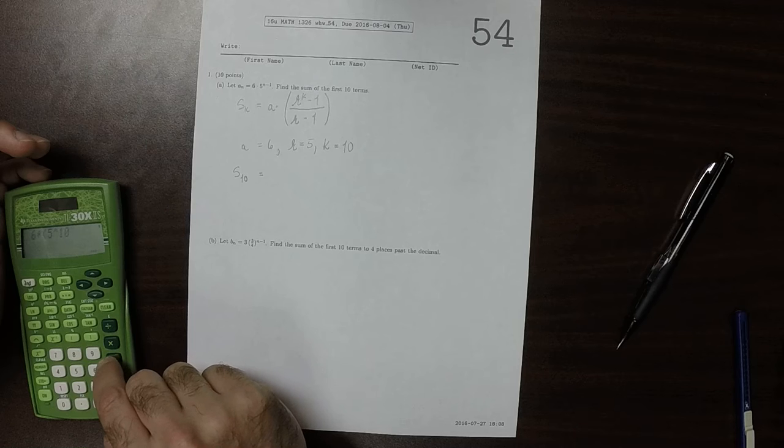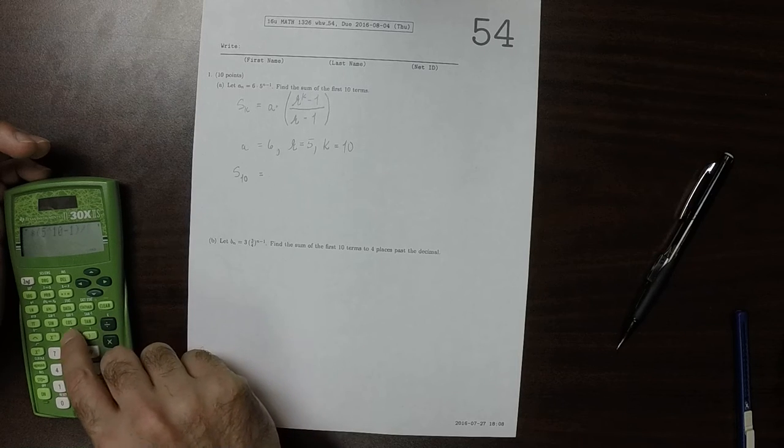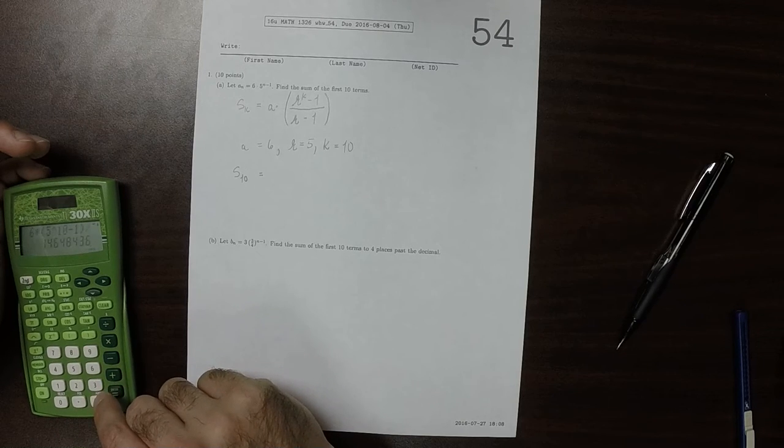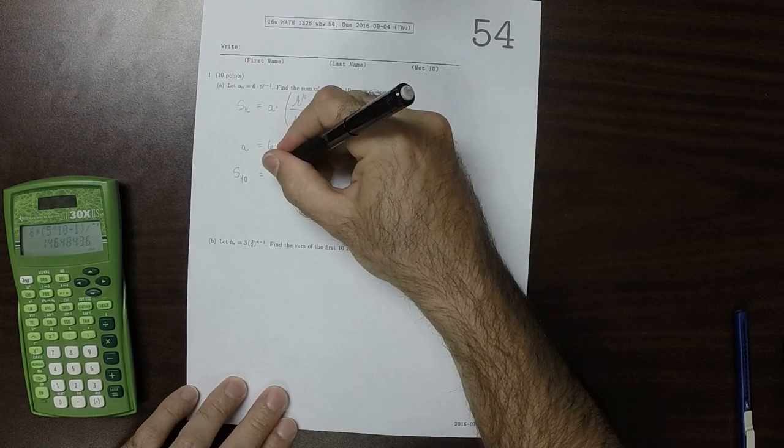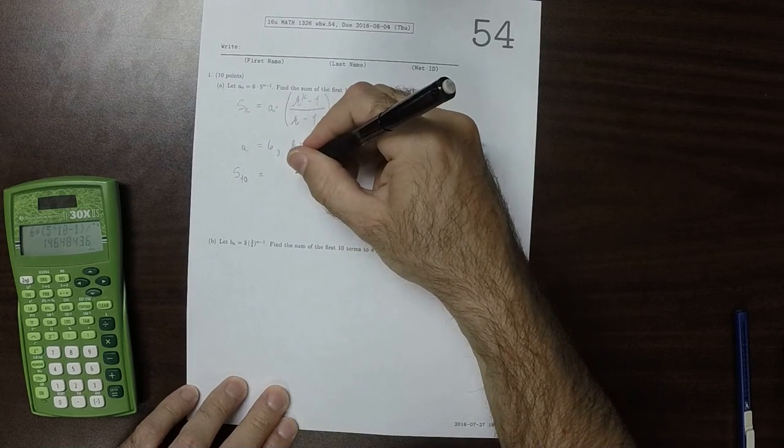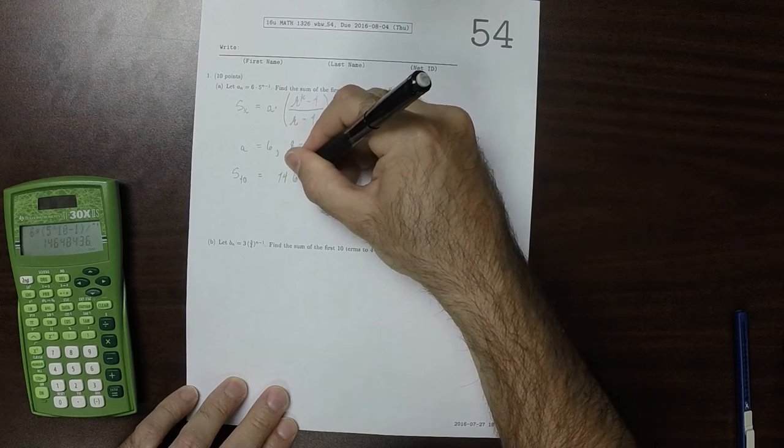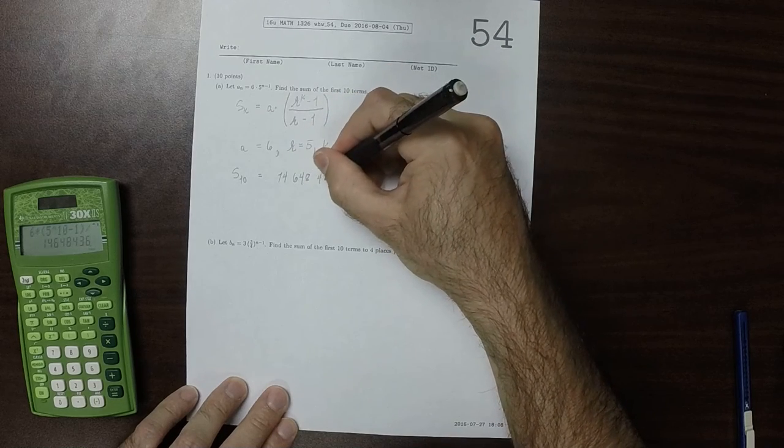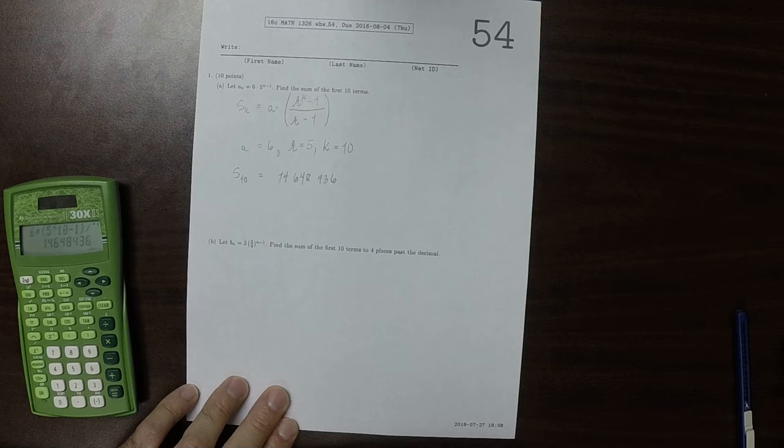So, minus 1 divided by 5 minus 1. That number, just reading it from the calculator, is 1, 4, 6, 4, 8, 4, 3, 6. So that'd be 14.6 million-ish.